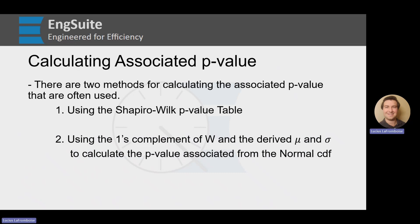Just like that, we're already ready to calculate our p-value. There are two methods for calculating the p-value that are often used. The first is using the Shapiro-Wilk p-value table. The second is using the one's complement of W, and then we use the derived mu and sigma to calculate the p-value from the normal CDF.